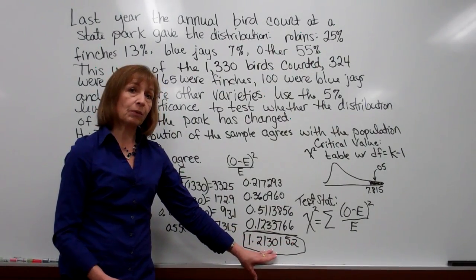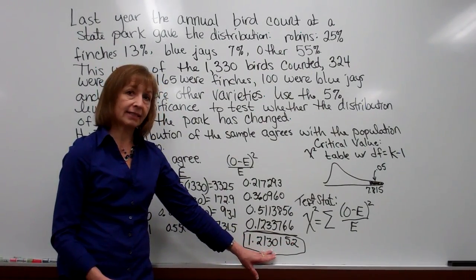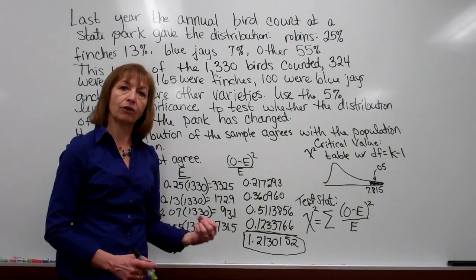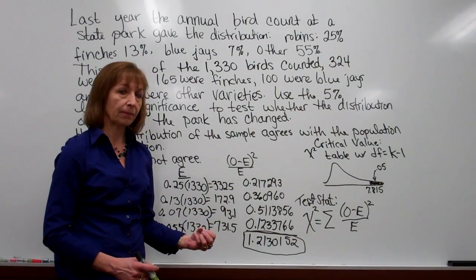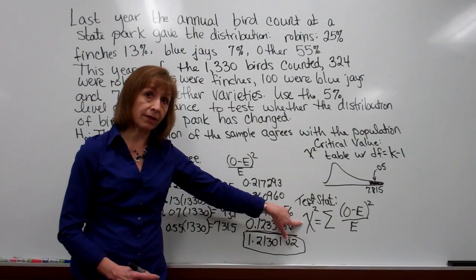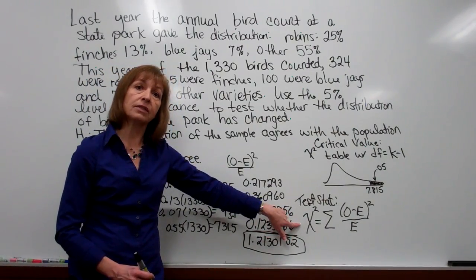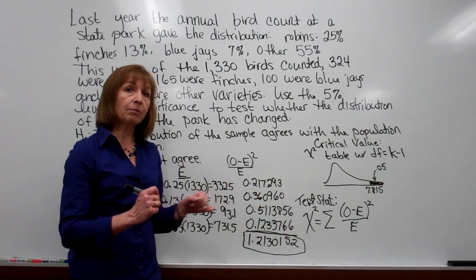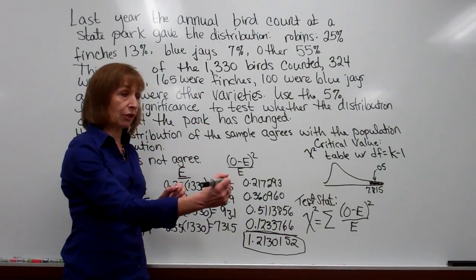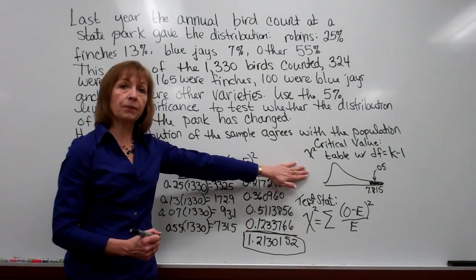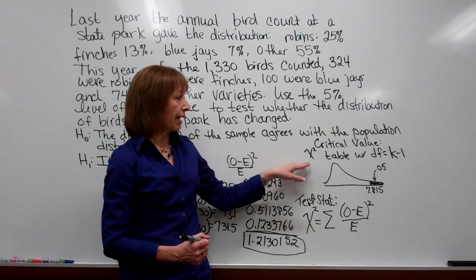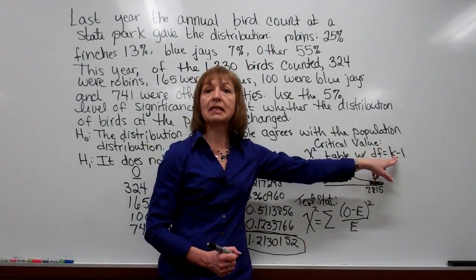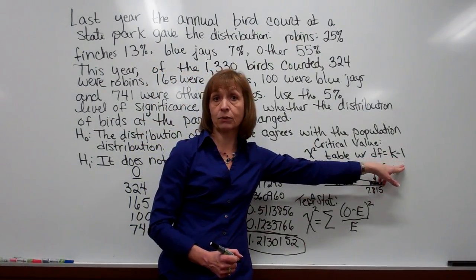Now next, what we want to do is we want to place our test statistic on the sketch that we've made for the distribution that has our critical value denoted. This is the chi squared distribution that we're going to go to, and with the chi squared distribution you have your degrees of freedom that you need to look up. Remember the chi squared distribution is skewed. So I've already written here for the critical value: for the chi squared table you want to look with your degrees of freedom being the number of categories minus 1.